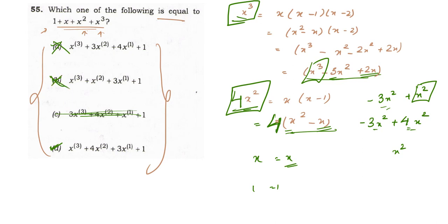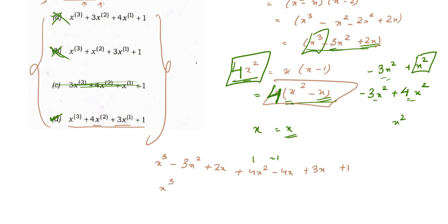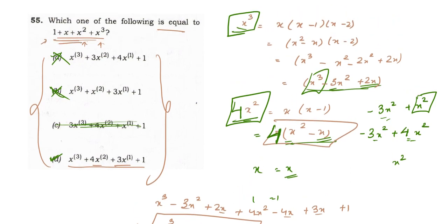To verify option D, we expand: x³ factorial = x³ - 3x² + 2x, plus 4·(x² factorial) = 4x² - 4x, plus 3x, plus 1. Combining: x³ + (-3x² + 4x²) + (2x - 4x + 3x) + 1 = x³ + x² + x + 1. This matches the question exactly, confirming option D is the correct answer.